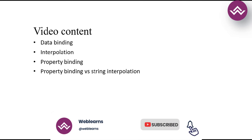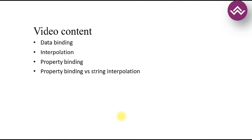So what is data binding? Data binding in Angular is a fundamental concept that allows you to synchronize data between the component and the UI of your Angular application. Angular offers various types of data binding including one-way binding and two-way binding to help manage the flow of data between the component and template.